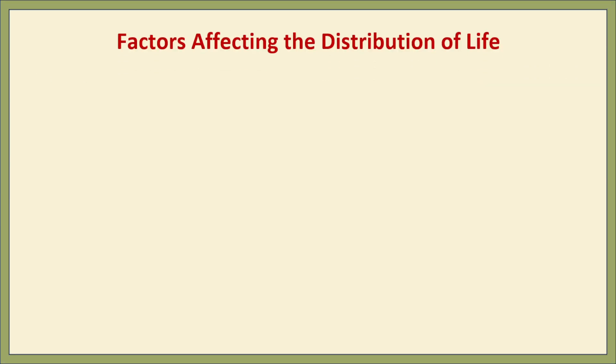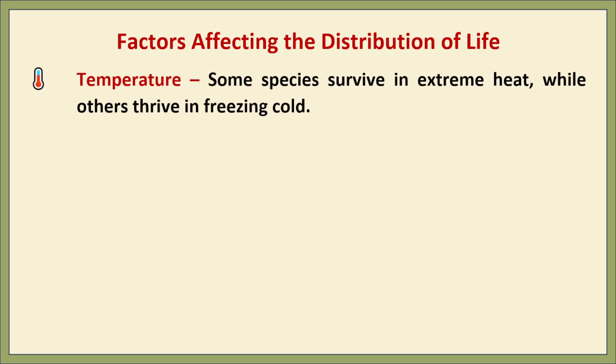The distribution of life on Earth is shaped by several environmental factors. Temperature plays a crucial role — some species survive in extreme heat like desert reptiles, while others thrive in freezing cold like penguins in Antarctica. Every organism has a temperature range in which it can function efficiently. Moisture level is also key: deserts with limited water support only drought-resistant species, while rainforests with abundant moisture are home to diverse plants and animals.